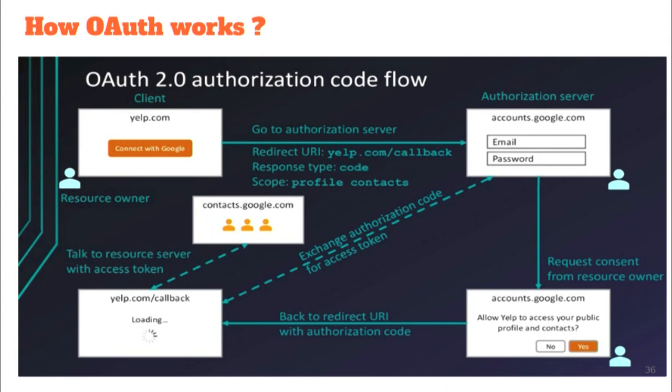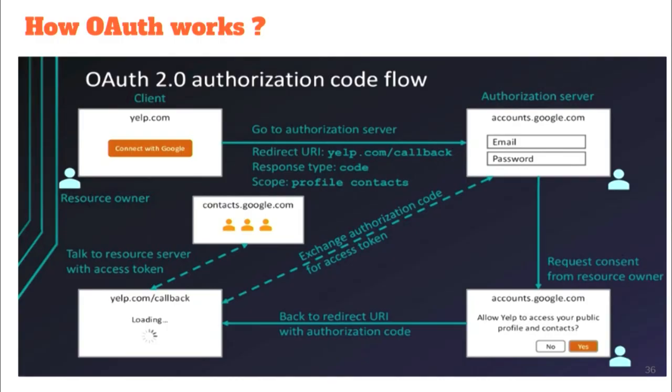OAuth2 is a protocol that uses access tokens to allow both authentication and authorization. Authentication verifies identity, while authorization provides privileges to a web app or application — such as when an app requests access to your Google account. That is authorization: allowing the app some privileges to access your data.